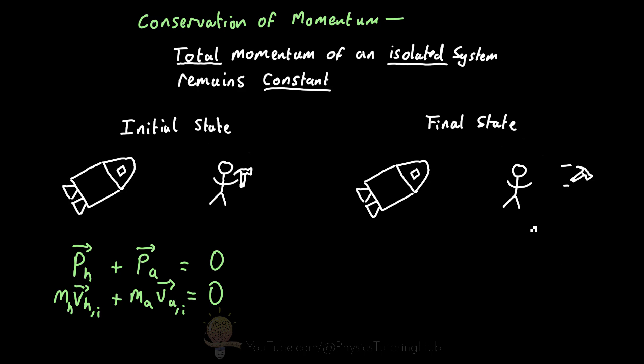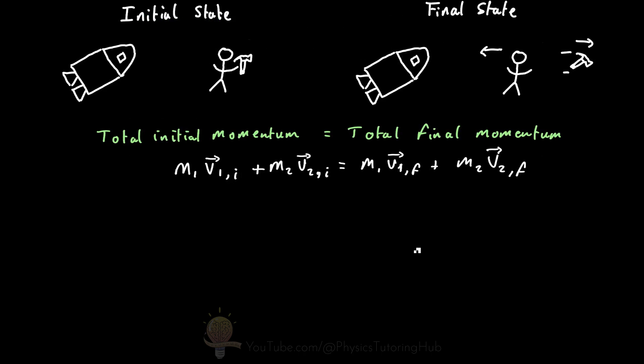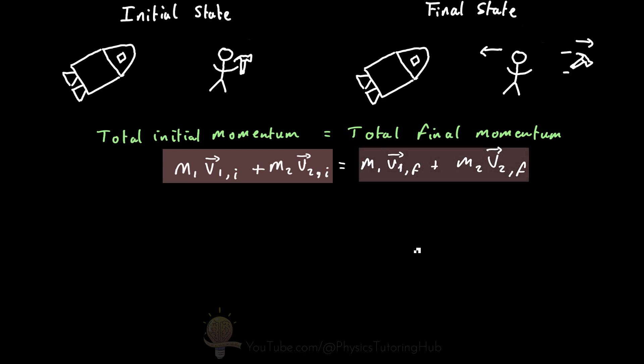To balance the momentum gained by the hammer, the astronaut must gain an equal amount of momentum in the opposite direction. This results in you moving towards the spacecraft. We can write the conservation of momentum mathematically: for an isolated system containing two objects, the total initial momentum equals the total final momentum.